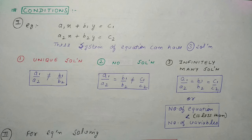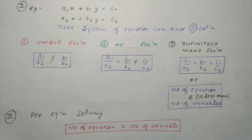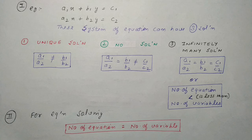एक और important point: infinitely many solution तब भी आएगा जब number of equations less than number of variables हो। Equation solving के लिए, number of equations should be equal to number of variables। अगर आपके पास 3 equations हैं और 3 variables हैं तो solve हो सकता है, लेकिन अगर 3 variables हैं और 2 equations हैं तो solve नहीं हो सकता।